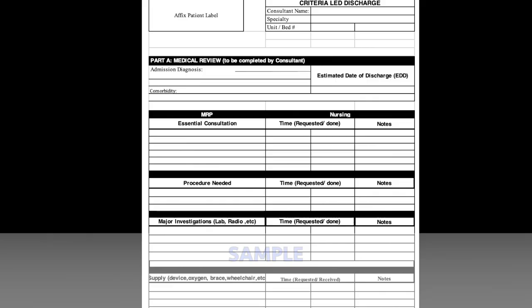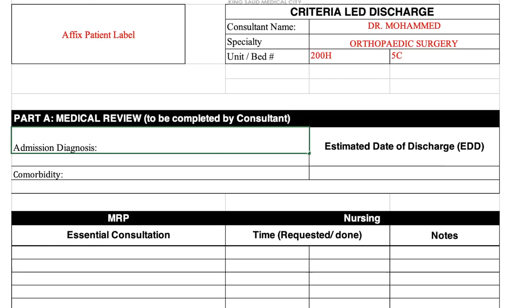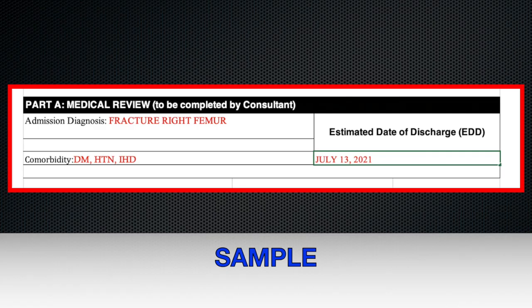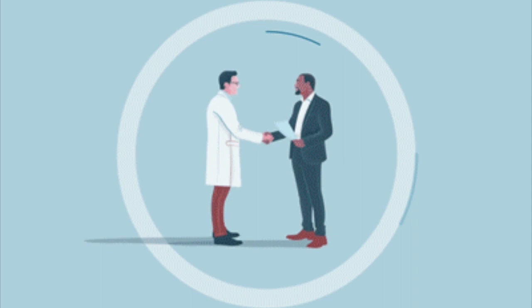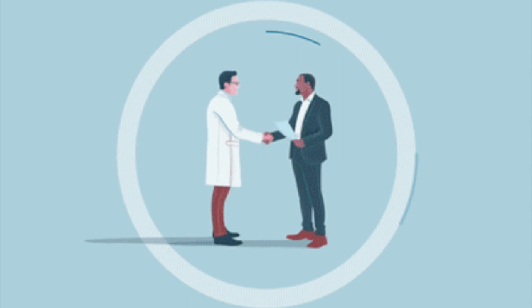The first fragment in Part A is the medical review which should be completed by the consultant. You can see the patient's admitting diagnosis, patient comorbidities, and estimated date of discharge. These are all necessary for the treatment plan of the patient so they should be correctly filled out. Note that the estimated date of discharge is significant to smoothly approach the patient discharge process and it mainly highlights the goal of the CLD approach.